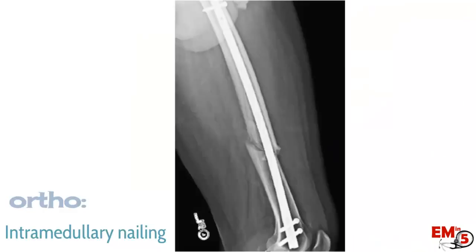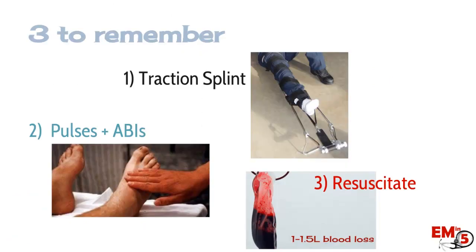In the end, you're going to need ortho to see the patient and usually operative repair. Three things to remember for femur fractures: put them in a traction splint at about 10% of body weight or up to 15 pounds; check for pulses and record ABIs to look for vascular injury; and think about resuscitation overall — go through your full ATLS protocol, do a full head-to-toe exam, and consider any blood loss from the fracture.